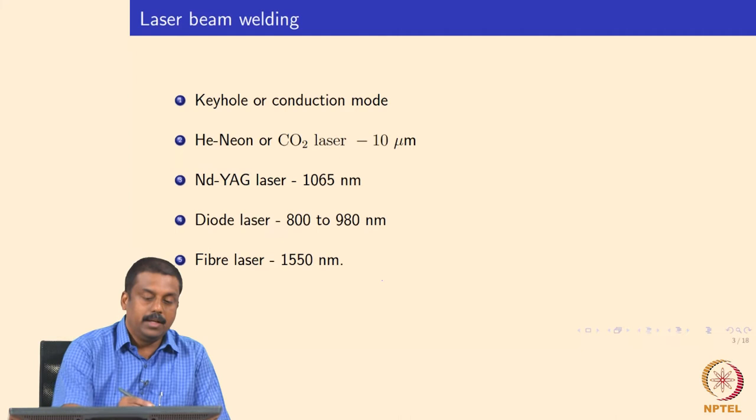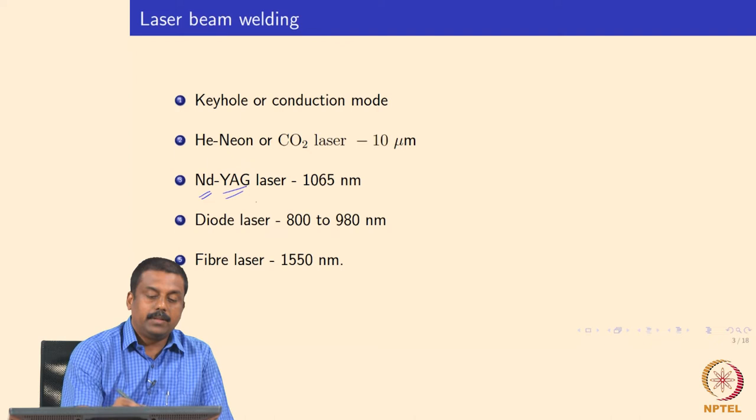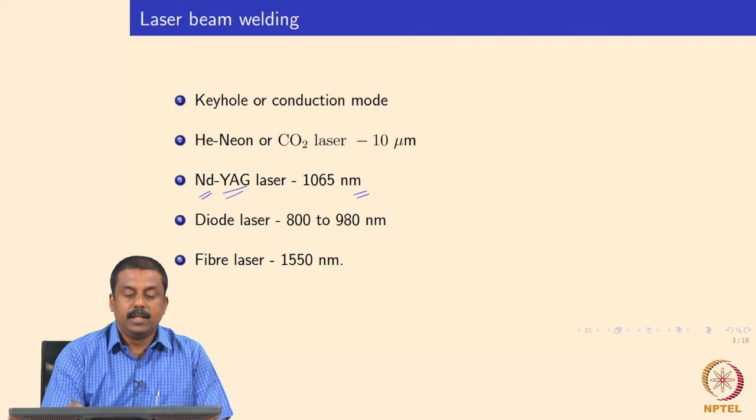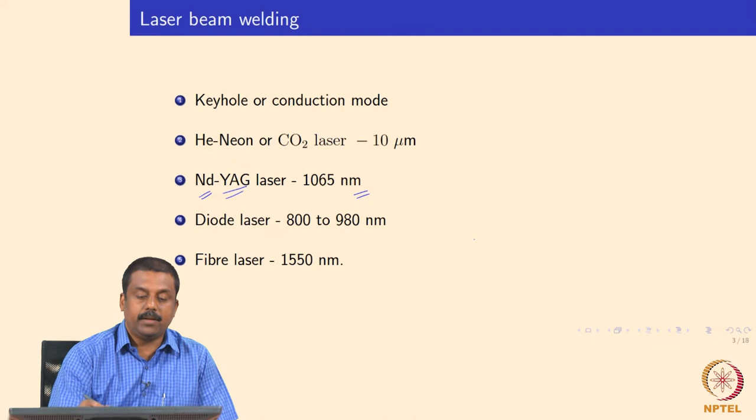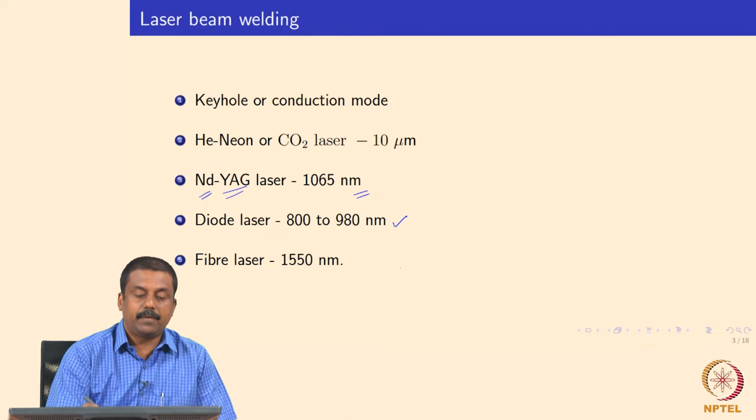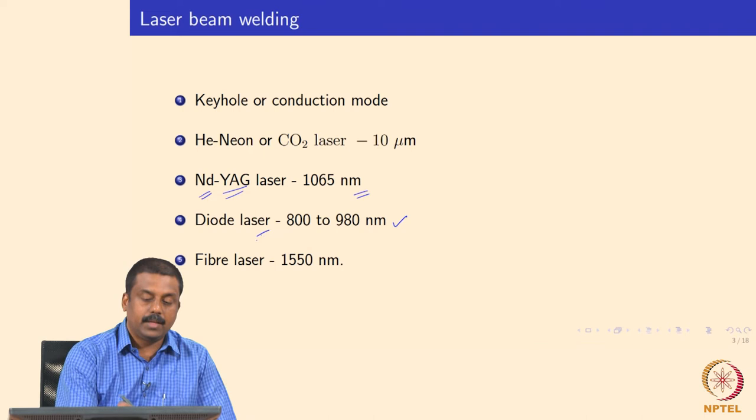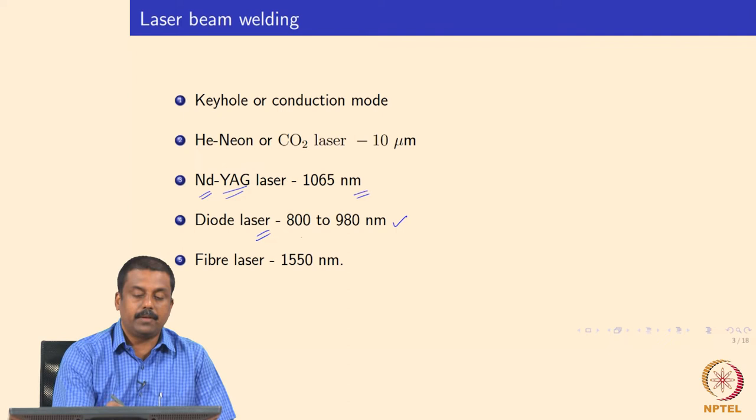Nd:YAG stands for Neodymium Yttrium Aluminium Garnet. This laser is a very commonly used type of solid state laser for the welding industry, producing a monochromatic beam with a wavelength of 1065 nanometers. Apart from gas and solid state lasers, we also have diode lasers, where various diode sources can generate wavelengths varying from 800 to 980 nanometers.